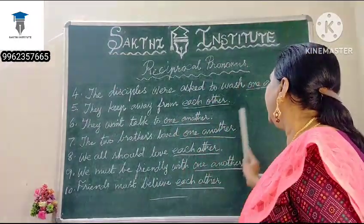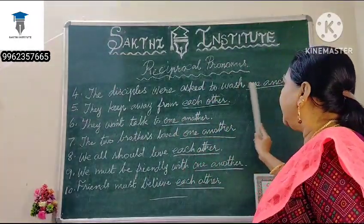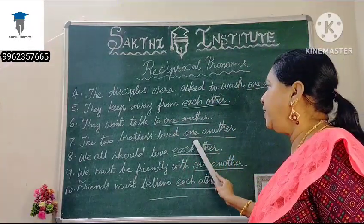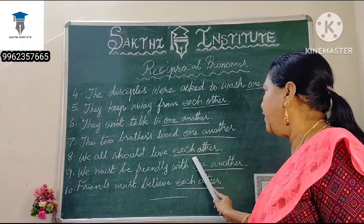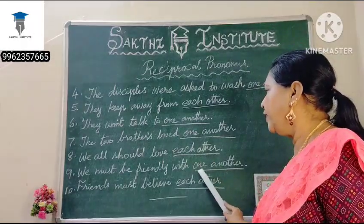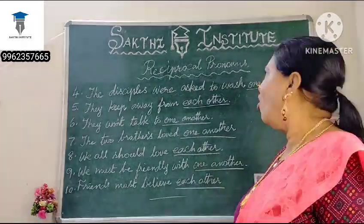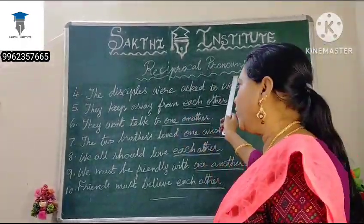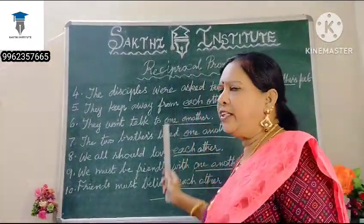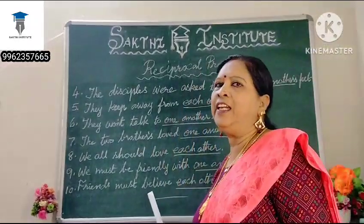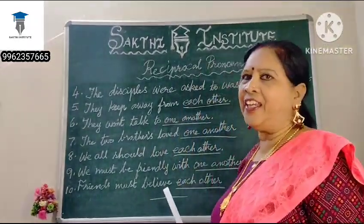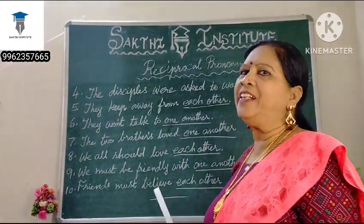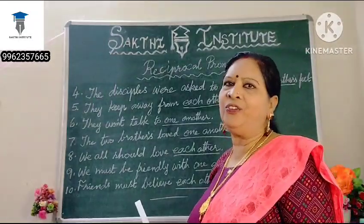Here, 'one another,' 'each other,' 'one another,' 'each other' — all these are called reciprocated pronouns. So write them clearly, read correctly, and try to speak English fluently. Thank you.